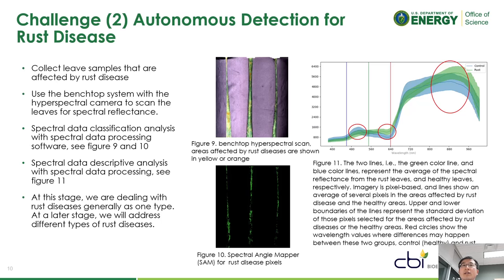We collected the leaf samples affected by Ross disease and used the lab-based benchtop system with the hyperspectral camera to scan the leaves for spectral reflectance. Our initial results from spectral data, descriptive analysis as well as image classification, achieved promising results, proving that Ross disease as one general type can be detected from hyperspectral imagery.